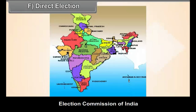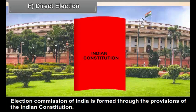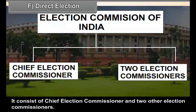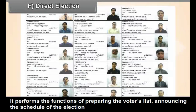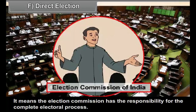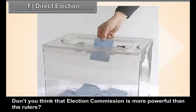Election Commission of India is formed through the provisions of the Indian Constitution. It consists of the Chief Election Commissioner and two other election commissioners. It performs the functions of preparing the voters' list, announcing the schedule of the election, and is responsible for conducting free and fair elections. The Election Commission has responsibility for the complete electoral process. Don't you think that the Election Commission is more powerful than the rulers?